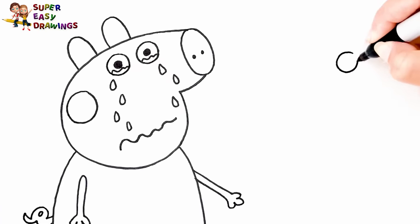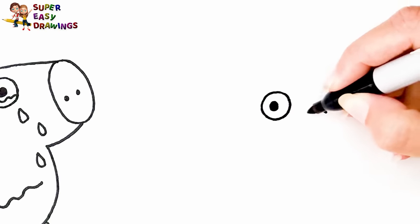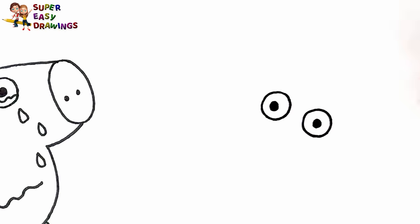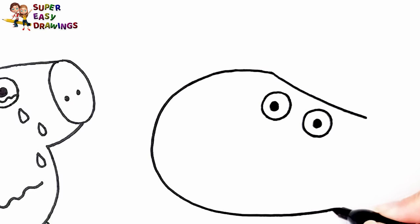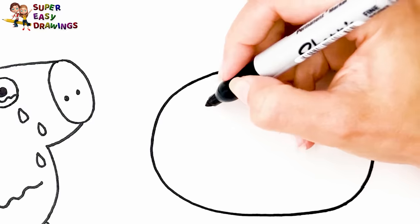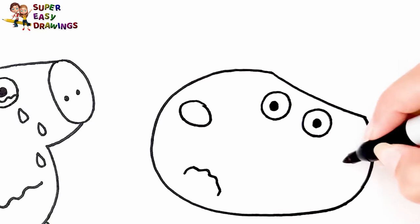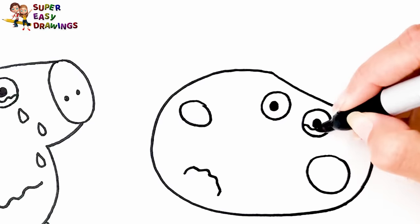I'm going to draw Susie Sheep. I draw her eyes, then the shape of her head. I draw her nose and sad mouth, a cheek. She is crying.